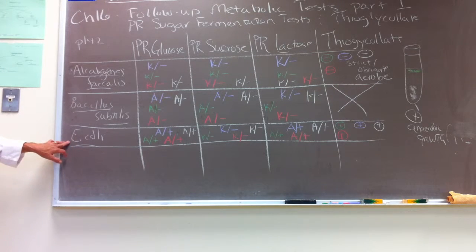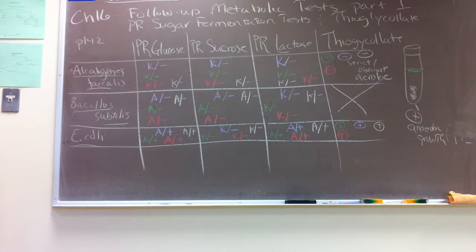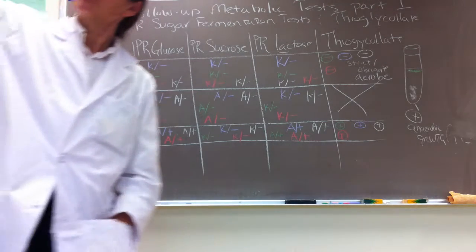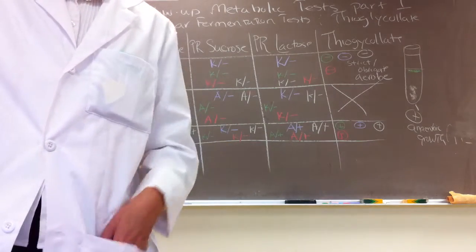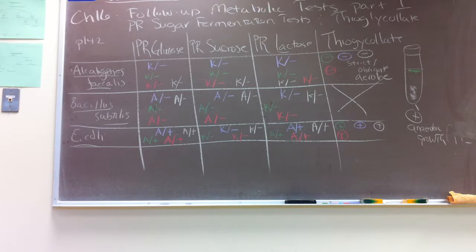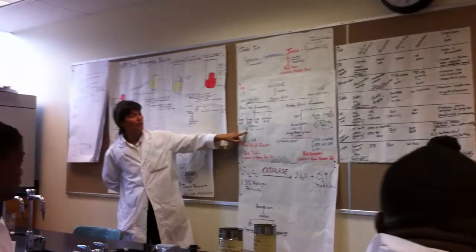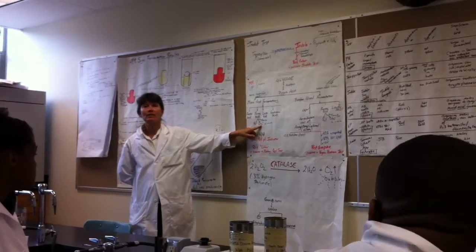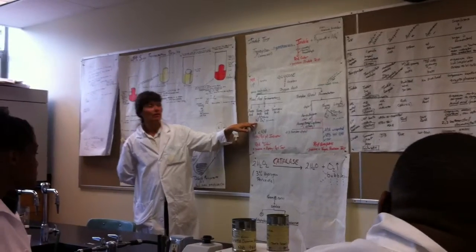E. coli has incredible metabolic diversity. When O2 is present it uses aerobic respiration; with no O2 it can switch to either anaerobic respiration or fermentation. E. coli has the enzymes for mixed acid fermentation. It has an enzyme called formate hydrogen lyase, which takes the intermediate formate acid and converts it to molecular hydrogen and CO2. That's why E. coli is such a great gas producer during fermentation.